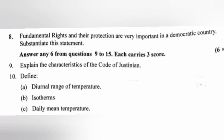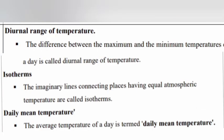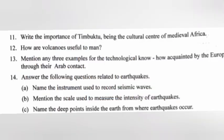Question 10: Define a) diurnal range of temperature, b) isotherms, c) daily mean temperature. Answer: Diurnal range of temperature — the difference between the maximum and the minimum temperatures of a day. Isotherms — the imaginary lines connecting places having equal atmospheric temperature. Daily mean temperature — the average temperature of a day.